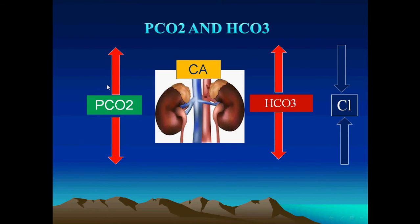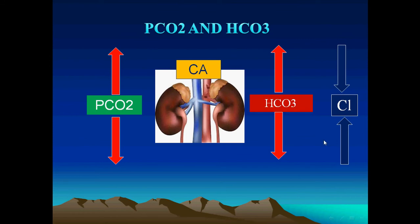The normal sum of bicarbonate and chloride is 130 mEq/L. In a COPD patient with elevated CO₂, bicarbonate rises to 31 while chloride falls — their sum remains 130 and the anion gap stays normal at 12. The reverse occurs in hyperventilation: bicarbonate is lost and chloride is gained, and the anion gap remains normal.